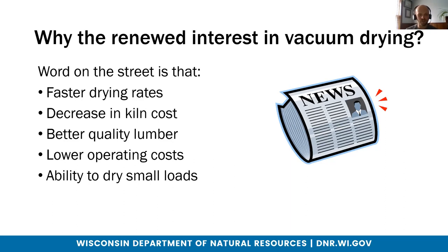The renewed interest in vacuum kilns comes from better, faster drying rates, lower costs, and better quality lumber output. Lower operating costs — electrical consumption is very little compared to operating some of the bigger conventional kilns, so people are getting more into that. And then the ability to dry smaller loads: vacuum kilns range from a couple hundred board feet to up to 20,000 or so board feet, similar to DH systems. The ability to dry smaller loads is a big interest nowadays, especially with niche urban wood markets — drying slabs and things like that — because of the small quantities available.